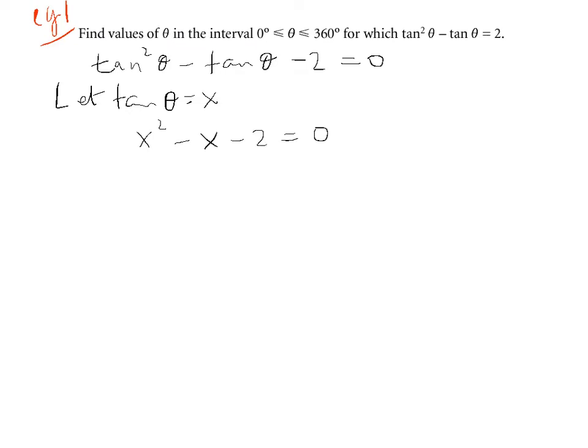We can now factorise this. And so we're looking at factors of minus 2 which add up to give us minus 1. So we've got x minus 2, x plus 1 equals 0. This will then lead to two solutions. We have x equals 2 or x equals minus 1. If we go back to tan theta, since x equals tan theta, we can say tan theta equals 2 or tan theta equals minus 1.